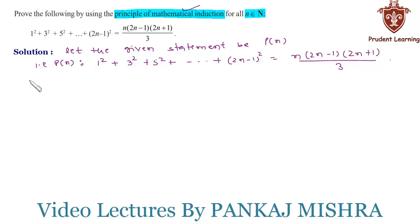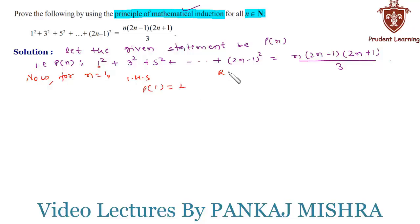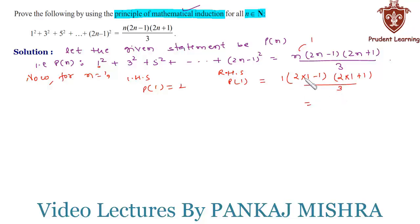In our first step we'll try to prove that the given equation is true for n = 1, which is our verification step. For n = 1, on the left-hand side we have P(1) as 1² = 1. On the right-hand side, substituting n = 1, we get 1 × (2×1-1) × (2×1+1) / 3 = 1 × 1 × 3 / 3 = 1. So the equation holds true for n = 1, since LHS = RHS.